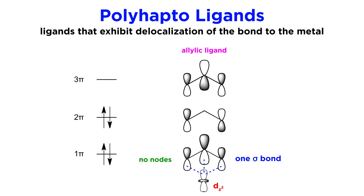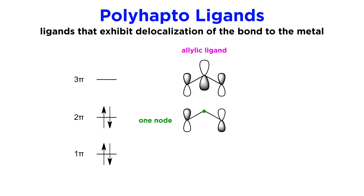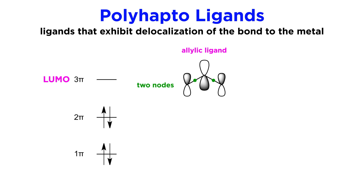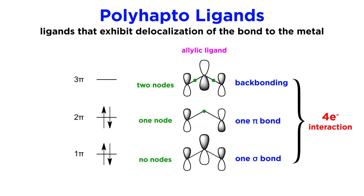This is the lowest energy orbital for the allylic system, so there are no nodes, and all of these lobes overlap in phase. Then for the next orbital there will be one node, so these p orbitals will be of opposite phase, and they can interact with this other d orbital in this way, generating a pi bond. Then going one orbital further to the LUMO of the allylic system, here there will be two nodes, and this time there will be backbonding from this other d orbital to further strengthen the bond. So overall, this allylic anion donates two pairs of electrons to the metal, or four electrons total.